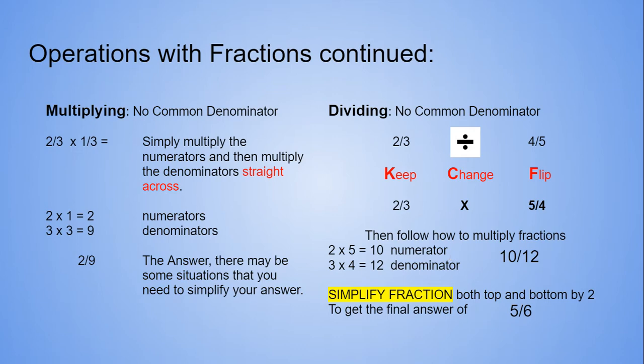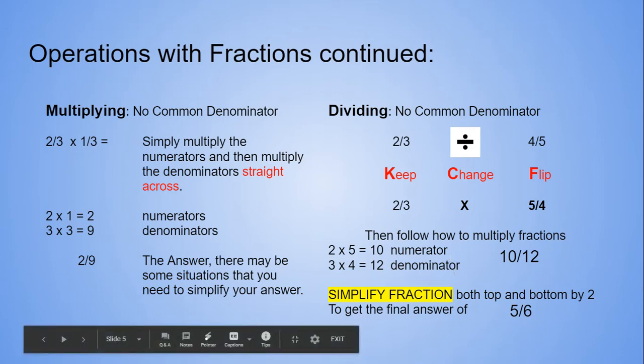Multiplying the numerators, 2 times 5 gives us 10. 3 times 4 gives us 12 for the denominators, gives us 10 over 12. And here we do have to simplify by 2 on both bottom and top to get 5 sixths.